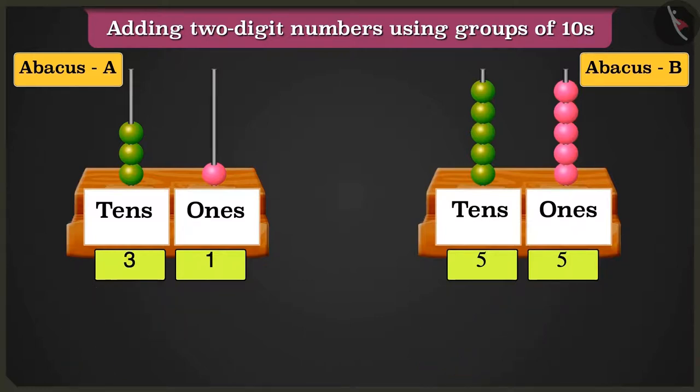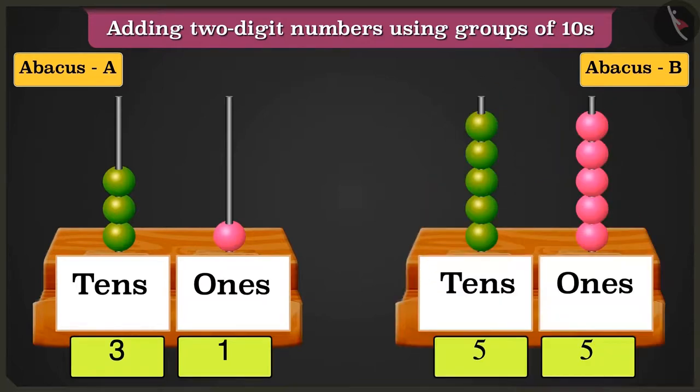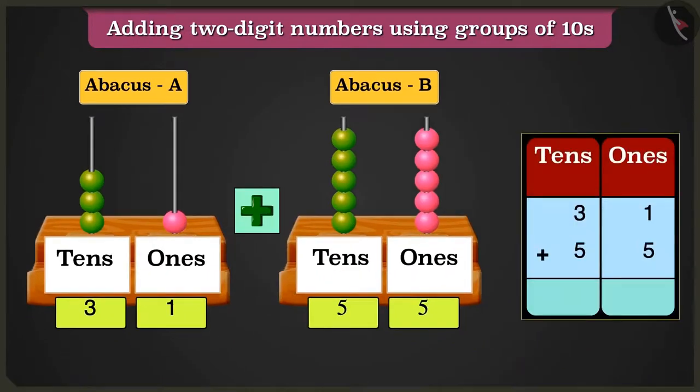Now tell me, if the numbers in abacus A and abacus B are added, what will be the answer? To add both numbers on the abacus, we will write them in the table of tens and ones.